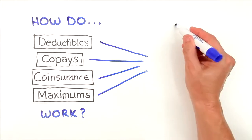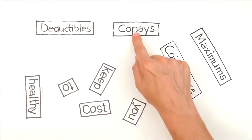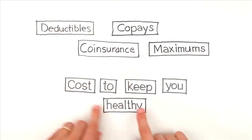The simple answer is they define the different ways health insurance companies pay most of the costs to keep you healthy. It's a little complicated at first, but not when you understand how everything works together.